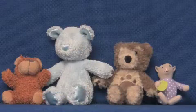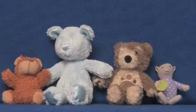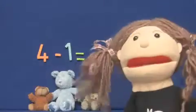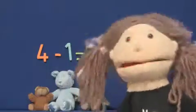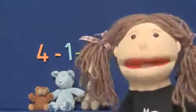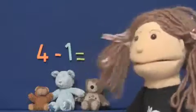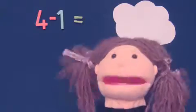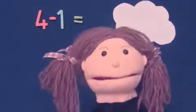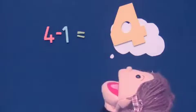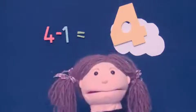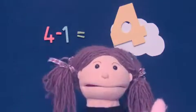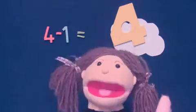Jenny had four teddy bears, then she gave one to her friend. How many teddy bears did she have left? We can write a number sentence about that. We started with four teddy bears, then we gave one away: four take away one equals. What does that come to? Put the first number in your head and the second number on your fingers, and count backwards: four, three. Four take away one is three.